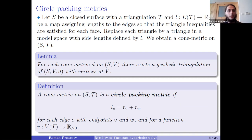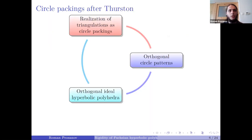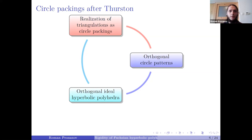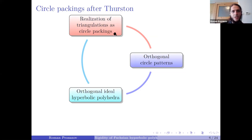Circle packings were famously highlighted by Thurston in his quest for geometrization of three-dimensional orbifolds. Thurston realized that realizations of triangulations as circle packings can be connected to orthogonal circle patterns and in turn to orthogonal ideal hyperbolic polyhedra. More generally, Thurston considered not just circle packings but circle patterns with prescribed intersection angles, and with their help he was studying geometric structures on three-dimensional orbifolds.